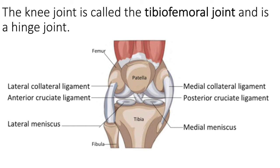A couple other important structures of the knee are the menisci — two fibrocartilage discs that sit between the femur and the tibia. The lateral meniscus is on the lateral side and the medial meniscus is on the medial side. As all fibrocartilage does, it resists compression, so it absorbs the force generated on the tibia by upper body weight and gravity.